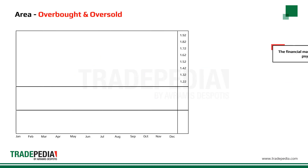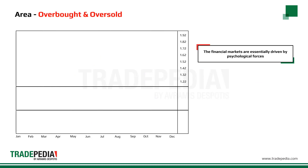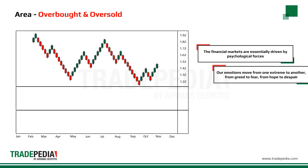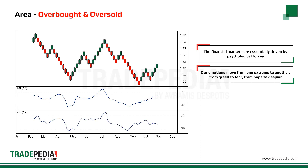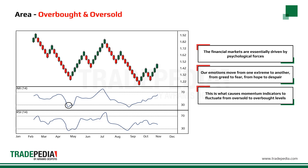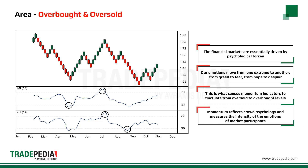The area: the financial markets are essentially driven by psychological forces. Our emotions move from one extreme to another, from greed to fear, from hope to despair. This is what causes momentum indicators to fluctuate from oversold to overbought levels. In a sense, momentum reflects crowd psychology and measures the intensity of the emotions of market participants.